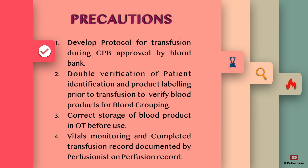The precautions to be taken to avoid a transfusion error are: develop a protocol for transfusion during CPB approved by the blood bank; double verification of patient identification and product labeling prior to transfusion to verify blood products for blood group; correct storage of blood products in OT before use; vitals monitoring and a completed transfusion record should be documented by the perfusionist on the perfusion record.